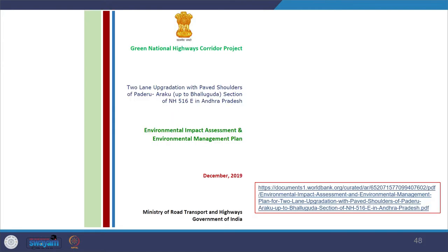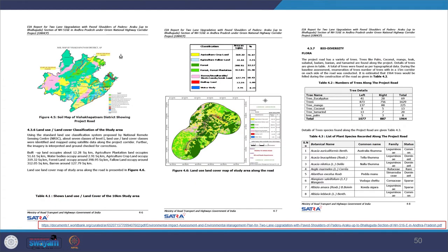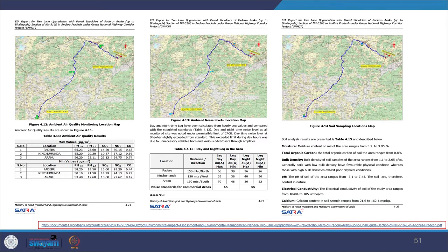Here is another example — the Green National Highway Corridor project from Andhra Pradesh — and you can see the EIA report there. You can see section 4.2 on the study area and physical environments, covering geology, hydrology, climate and rainfall — all those intensive details are provided. You can see land use, biodiversity, ambient air quality, ambient noise levels, and soil sampling — all that intensive detailed study is there. You can download that and go through the report.